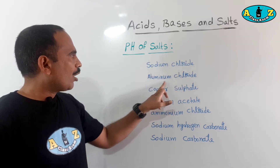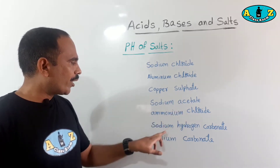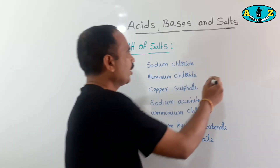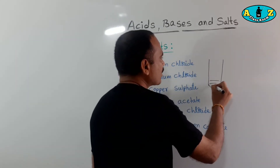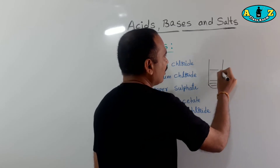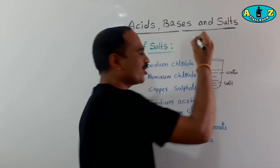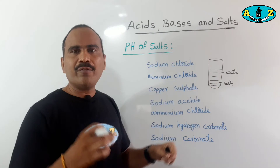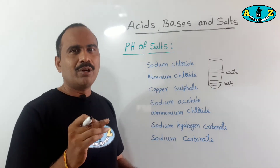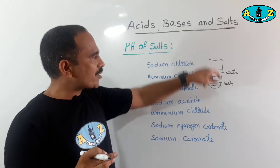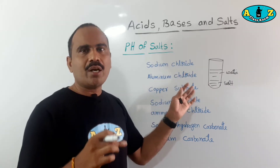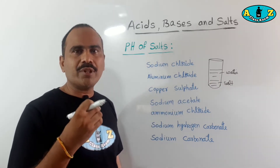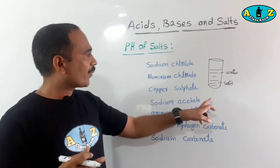The salts we are testing are: sodium chloride, aluminum chloride, copper sulfate, sodium acetate, ammonium chloride, sodium hydrogen carbonate, and sodium carbonate. Take each salt in a separate test tube, add distilled water — distilled water means pure water — and the salts will dissolve to form a solution. Now take a blue litmus paper and red litmus paper, dip them in the salt solution, and observe whether it is acidic, basic, or neutral. Also test the solution with a universal indicator to determine the pH value.